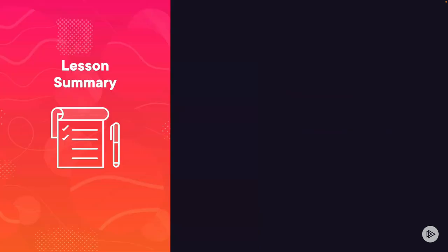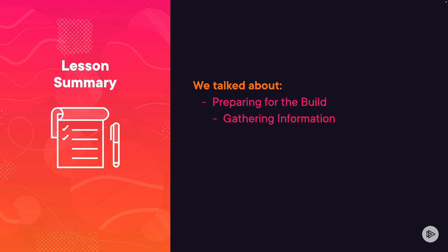The version numbers can change quickly with updates, but you should use the latest stable release — anything that says stable in the left-hand column. In this lesson, we talked about preparing for the build, gathering information, choosing a platform, and choosing the kernel source code.